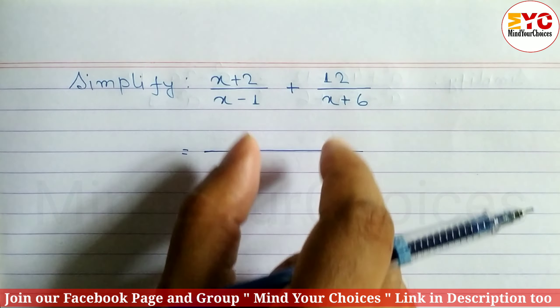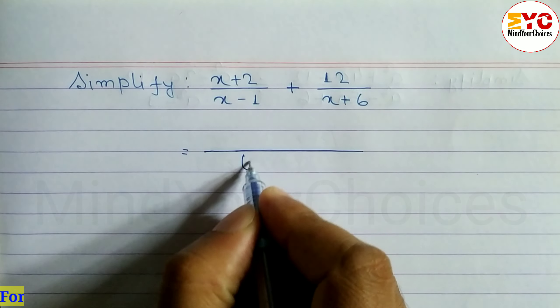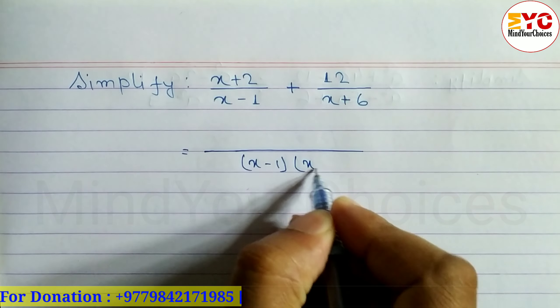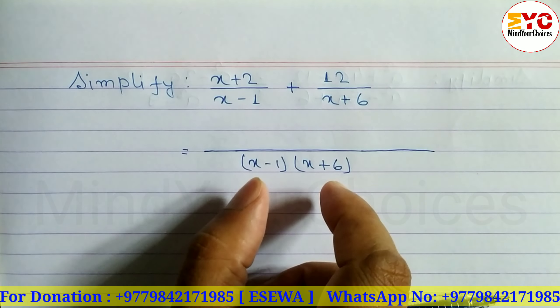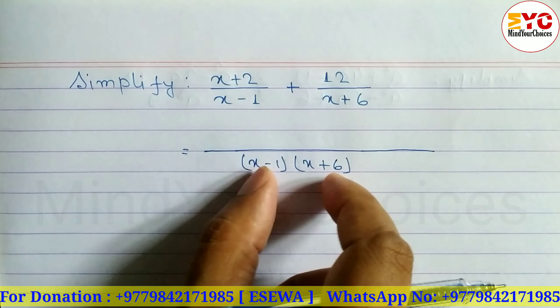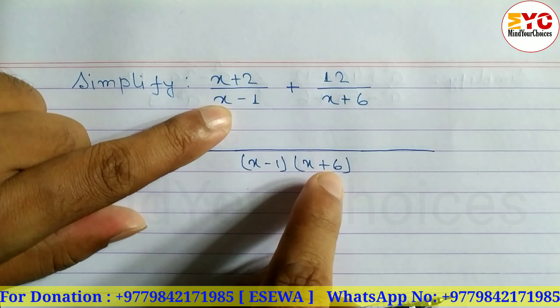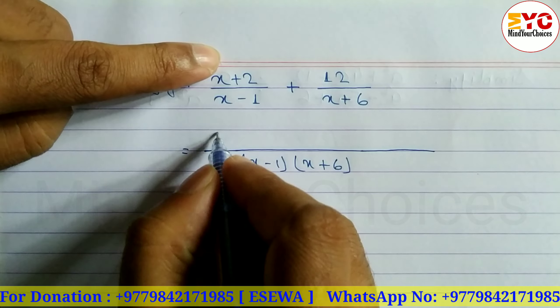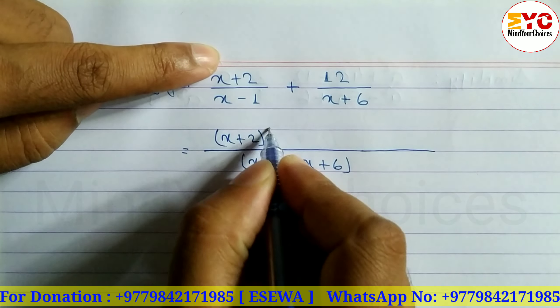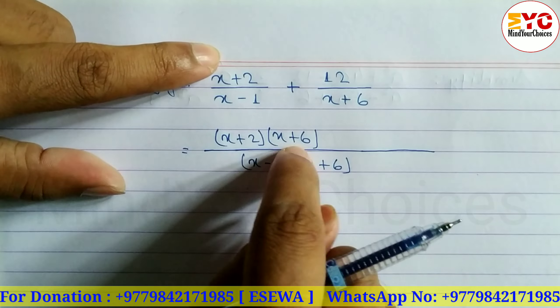To take LCM, first take common terms then remaining terms. But in these two there are no common terms, so take both denominators: x minus 1 and x plus 6. After that, divide the denominator. Divide this by x minus 1 - the first x minus 1 cancels. What remains is x plus 6, which we multiply with x plus 2. So we can write x plus 2 times x plus 6.